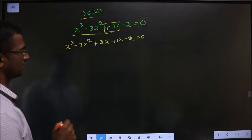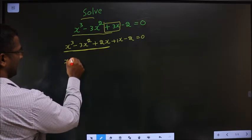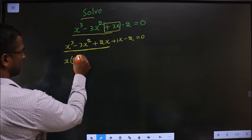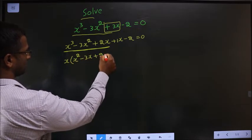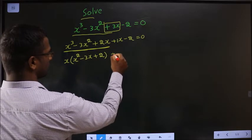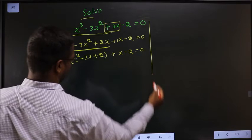Next take x common from these three. So x outside, here I get x square and here minus 3x plus 2. Here no change.